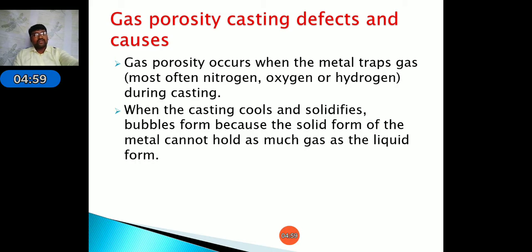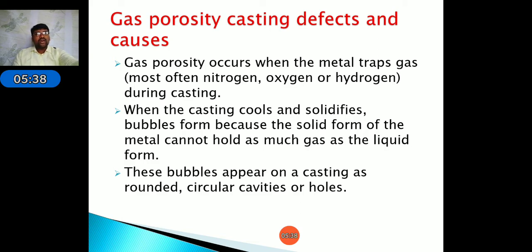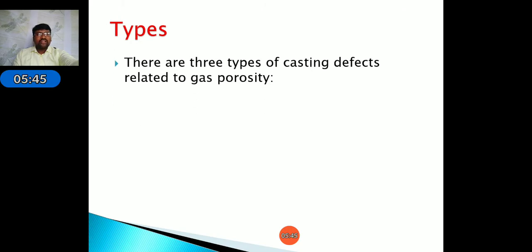These bubbles appear as round circular cavities or holes. Gas porosity is mainly classified into three types: pin holes, subsurface holes, and blow holes. Blow holes form on the surface of the object, subsurface holes form inside the object, and pin holes are small holes formed in groups at the same area.